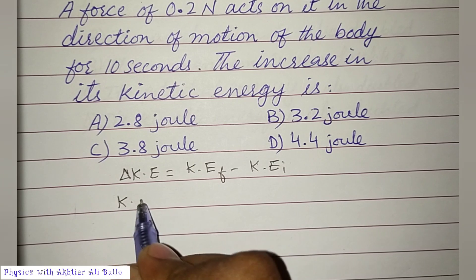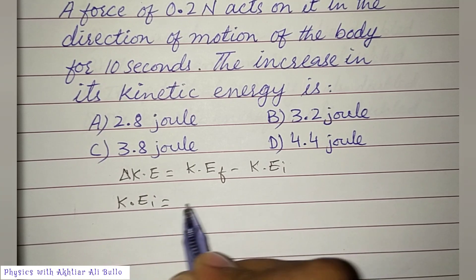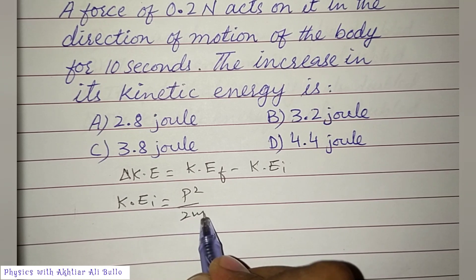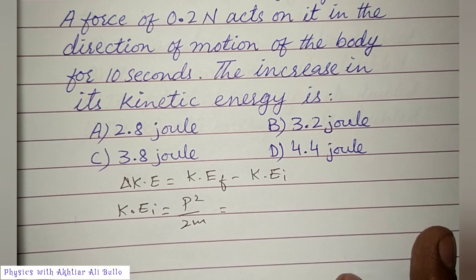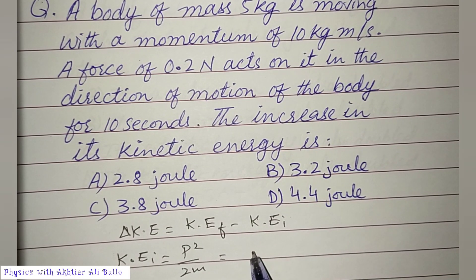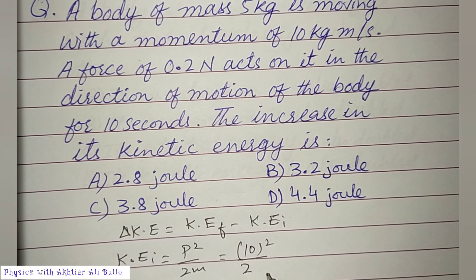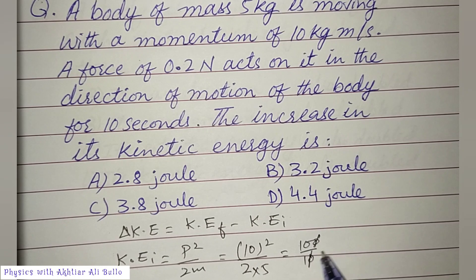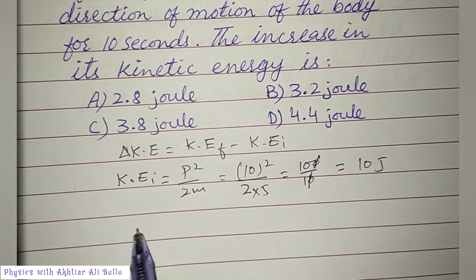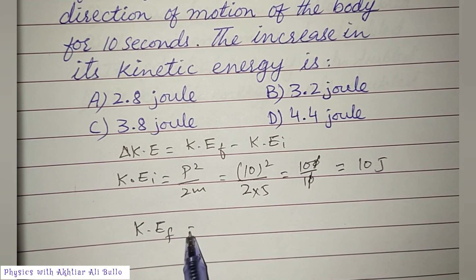Using the formula: initial kinetic energy equals P² divided by 2M. Here P is given as 10, so the square of 10 divided by 2 into M — mass is given as 5. So 100 divided by 10 gives us initial kinetic energy as 10 Joules.